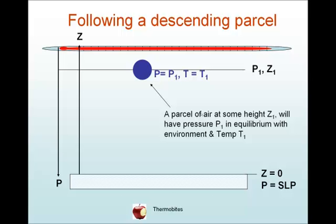Let's follow our parcel of air descending through the atmosphere. It starts at a pressure P₁ at a height Z₁ above sea level pressure, or above the surface where Z = 0. The parcel of air has the pressure of its environment P₁ and the temperature of its environment T₁. So it's in equilibrium, pressure equilibrium and thermal equilibrium.